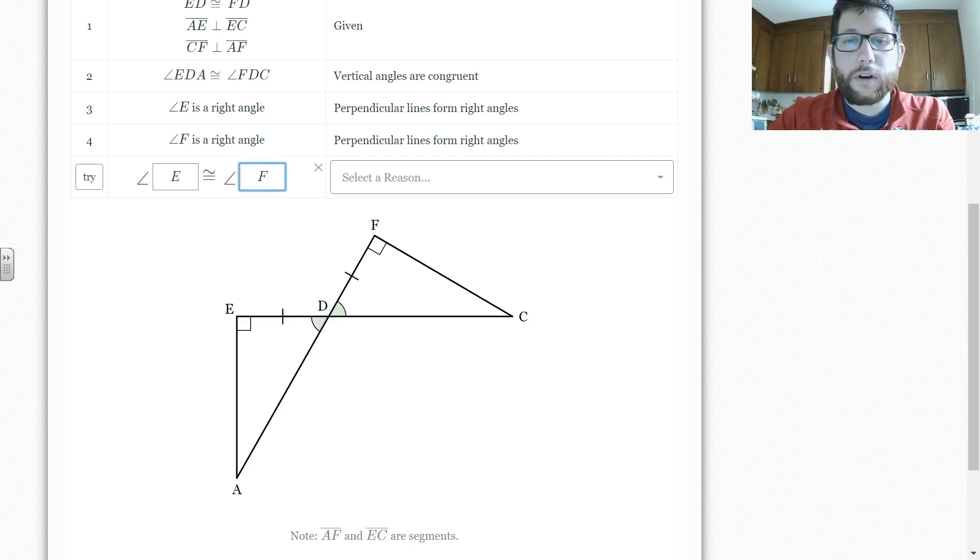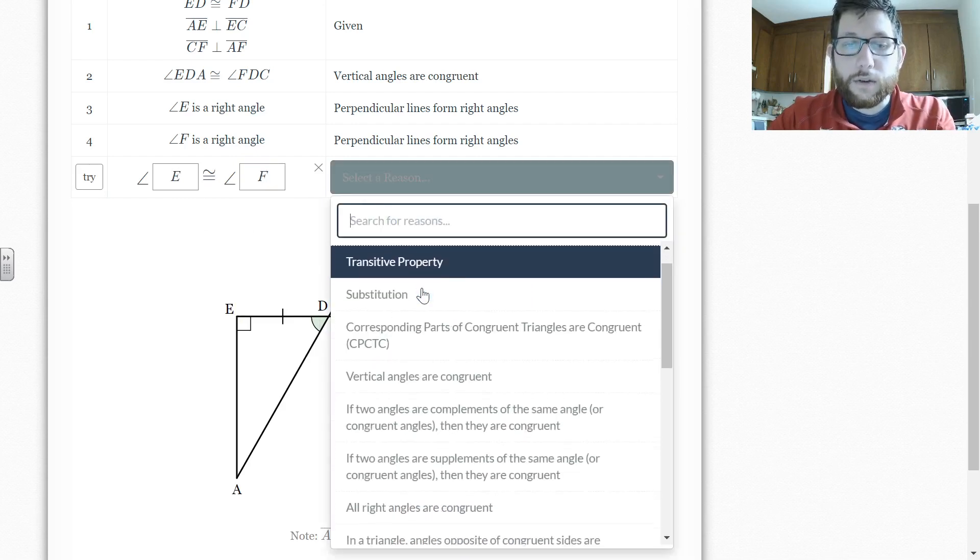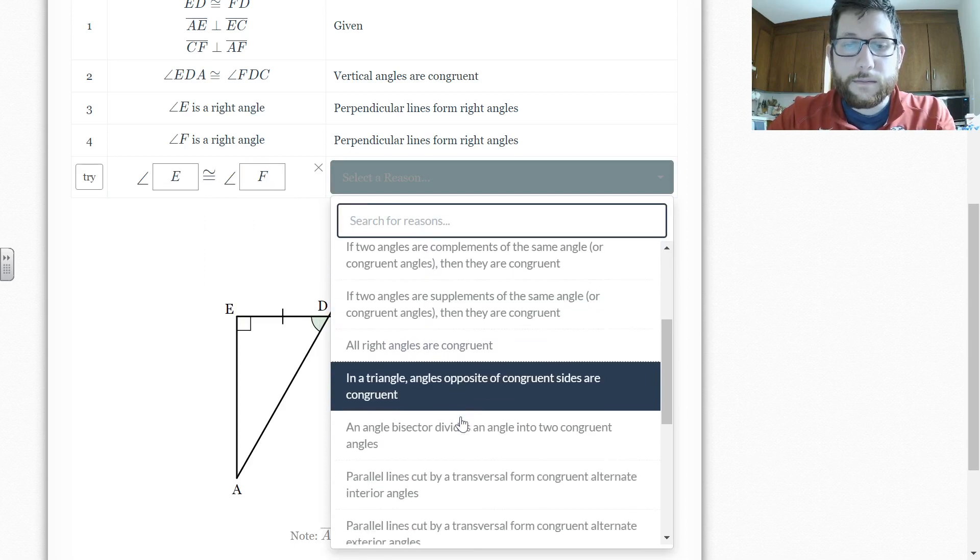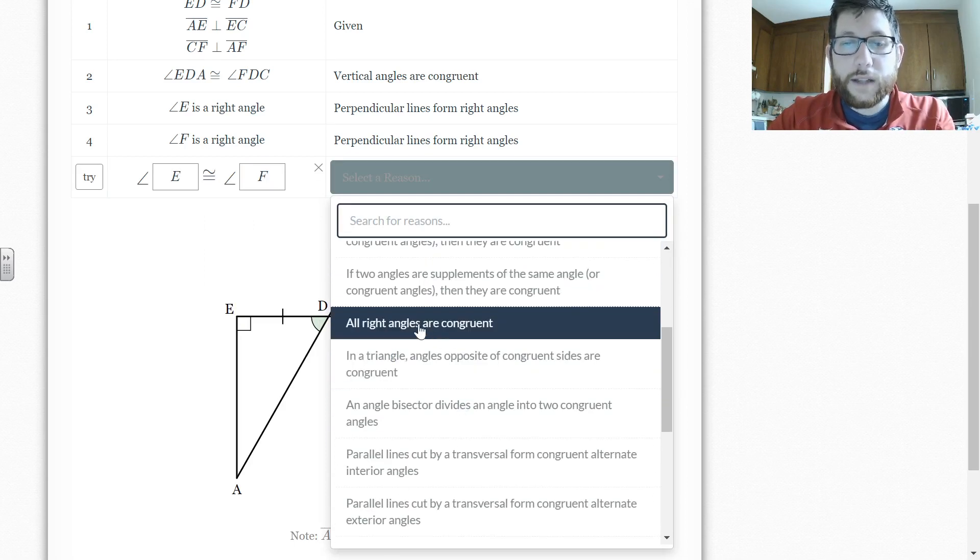And then I'm going to say that the two angles are equal to each other. So I'm going to say E and F are congruent. Why are they congruent? Well, let's take a look through our list. All right angles are congruent. That's what we're going to look for here.